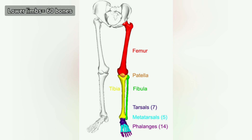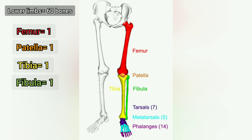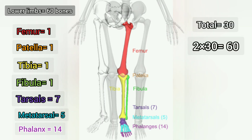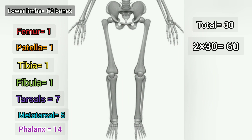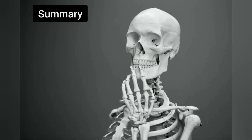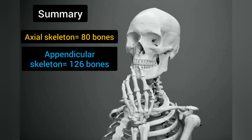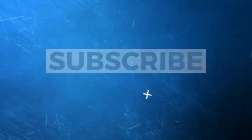Lower limbs are similar to upper limbs in count, but lower limbs add 2 extra bones — the tarsals. Each lower limb consists of 1 femur, 1 patella, 1 tibia, 1 fibula, 7 tarsals, 5 metatarsals, and 14 phalanges — so 1 side is 30 bones, and 2 limbs give 60 bones. Overall: axial skeleton 80 bones plus appendicular skeleton 126 bones gives the total bone count. That's it for today — I will see you guys in the next video.